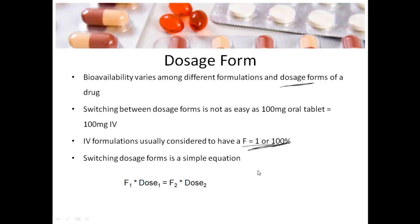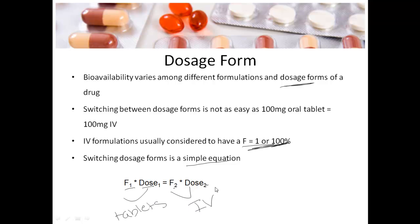When you are switching between dosage forms, we have a very simple equation: bioavailability times dose equals bioavailability times dose of the two different formulations. So on one side you put all the information for tablets, and on the other side you put all your information for IVs, and you just cross-multiply.